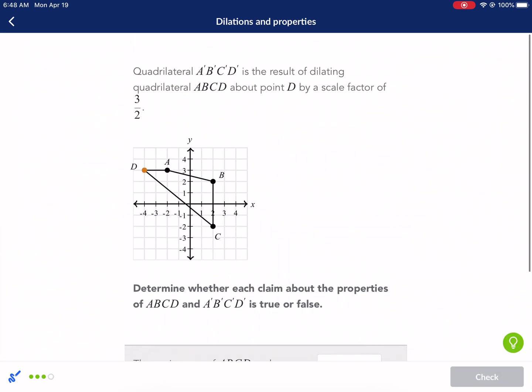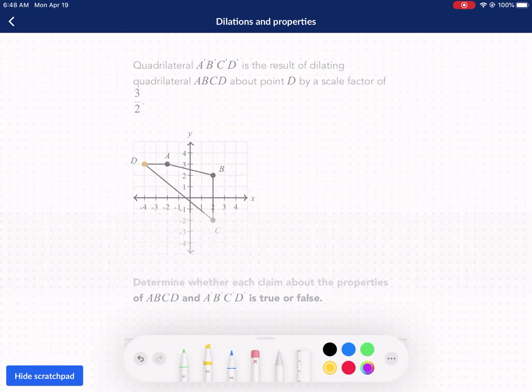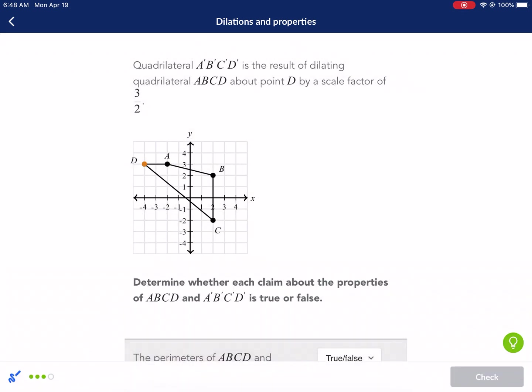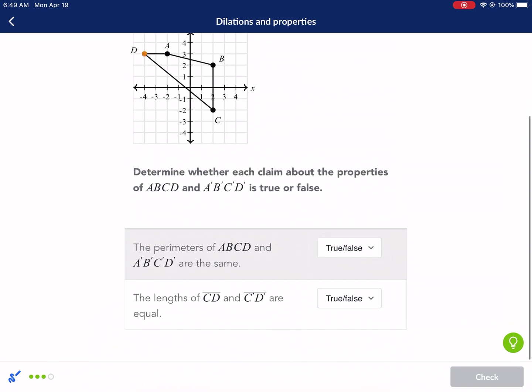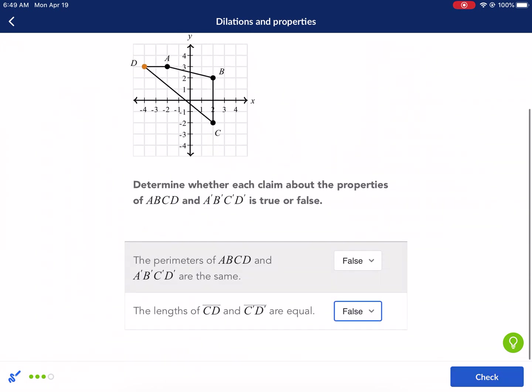Now we're going about point D, looks like, based on the color. And it's a scale factor of 3 over 2. That's 1 and a half. So it's going to be a growth here because it is bigger than 1. Determine whether each claim about the properties of ABCD and ABCD prime is true or false. The perimeters of ABCD are the same. No. If it's going to expand, then the perimeter is definitely going to change. The lengths of CD and CD prime are equal. That is also false because it's going through an expansion. So it's growing. And those are both false.